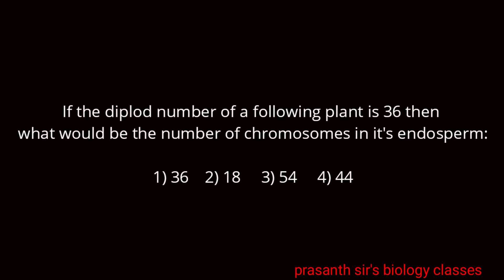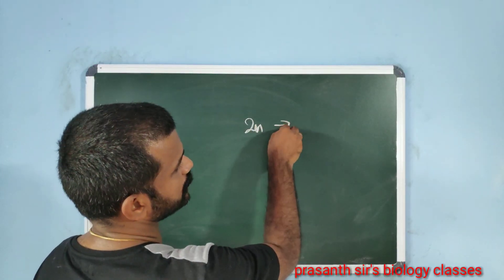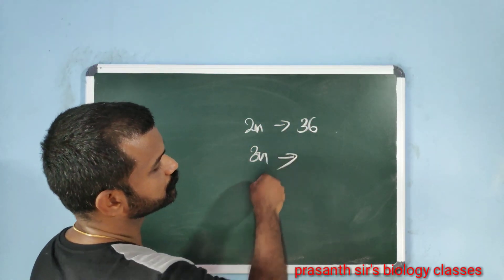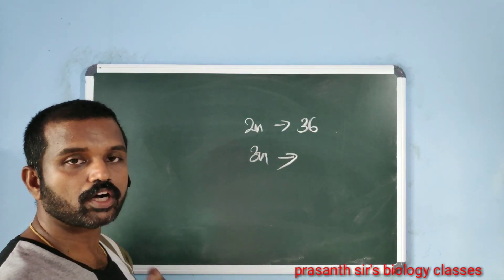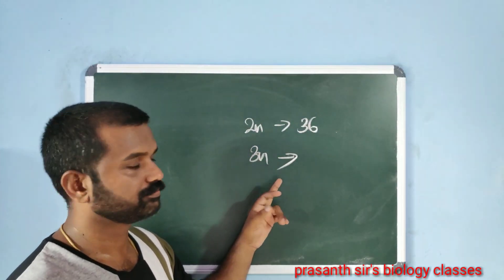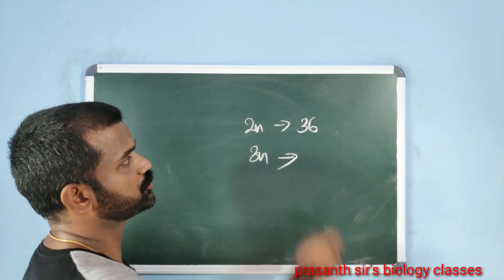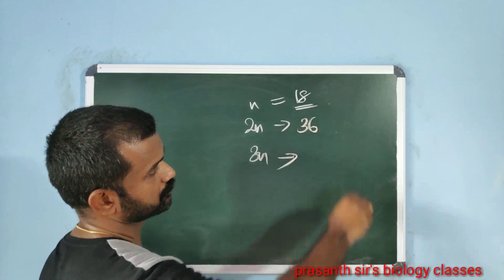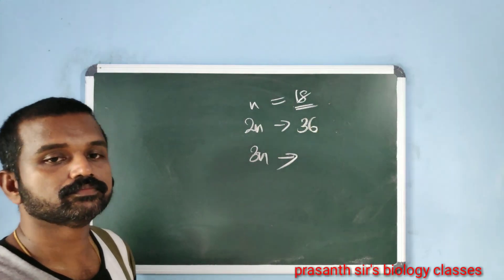If the diploid number of a flowering plant is 36, what would be the number of chromosomes in its endosperm? The given data is 2n = 36, meaning n = 18. The endosperm is triploid, so the triploid number would be 3n = 54.